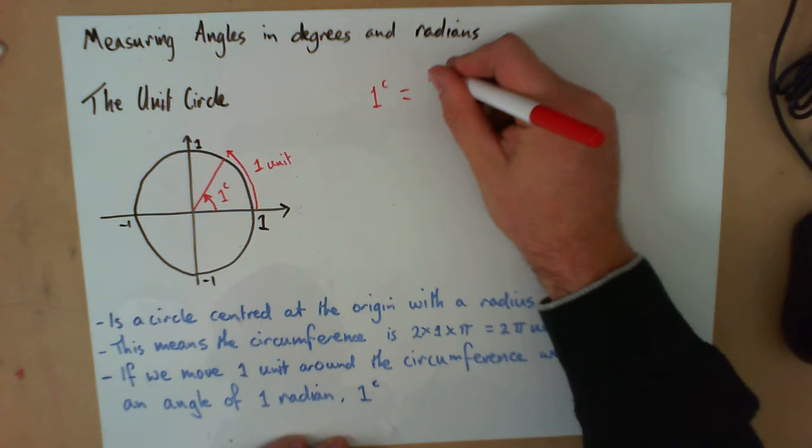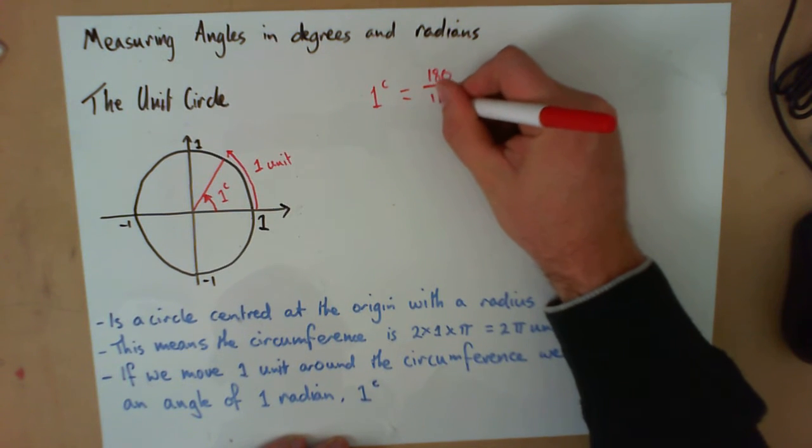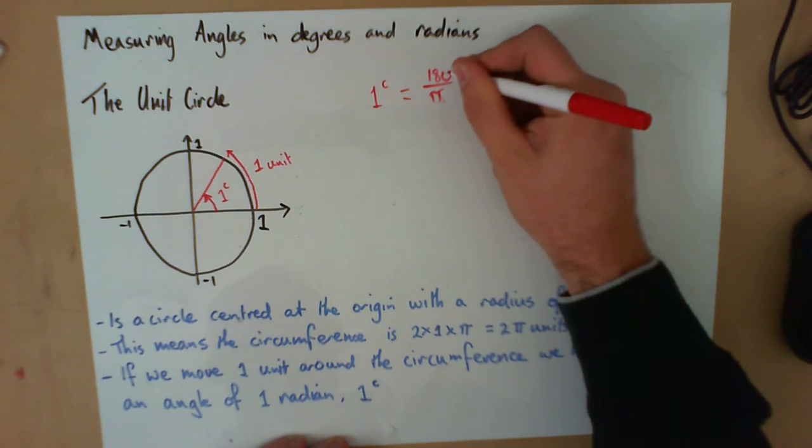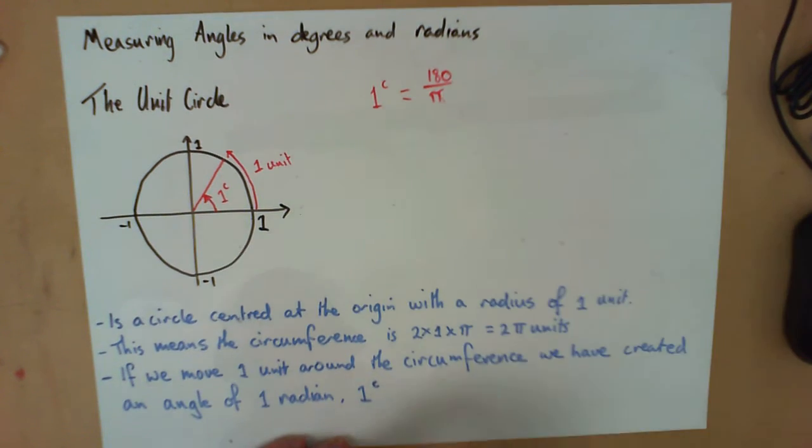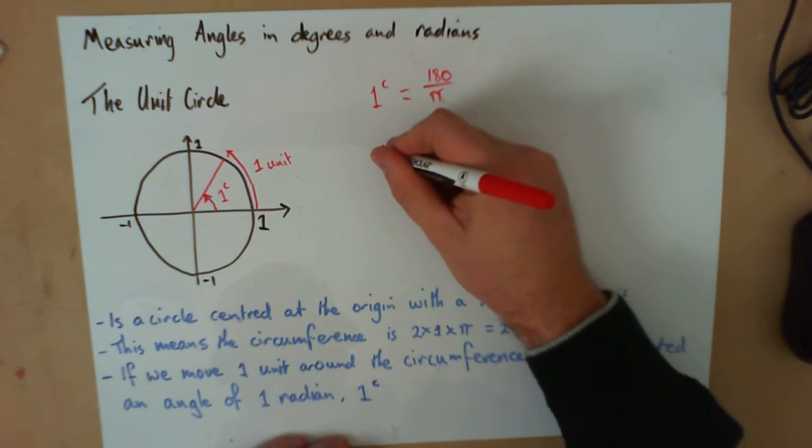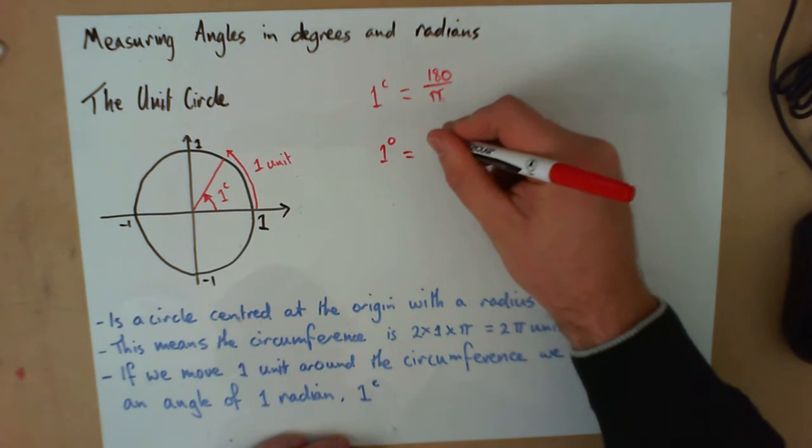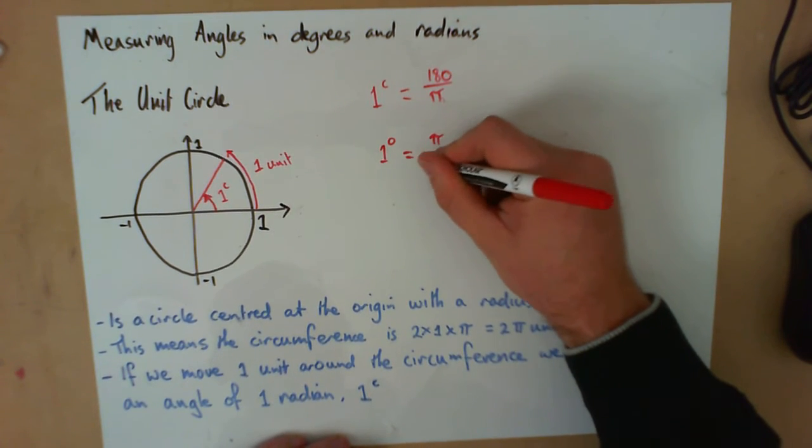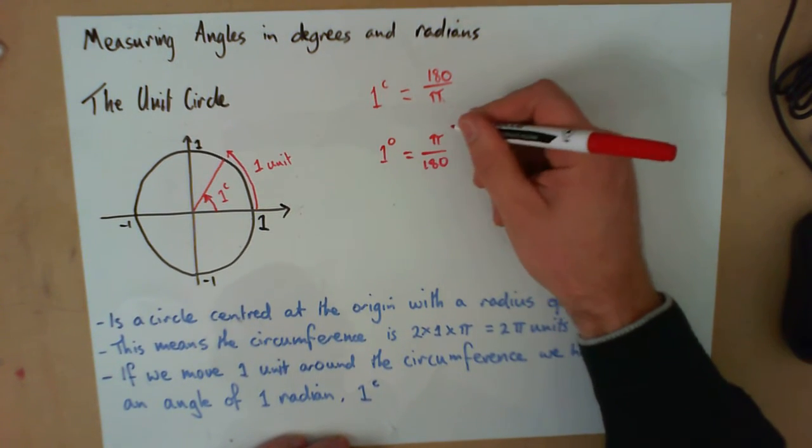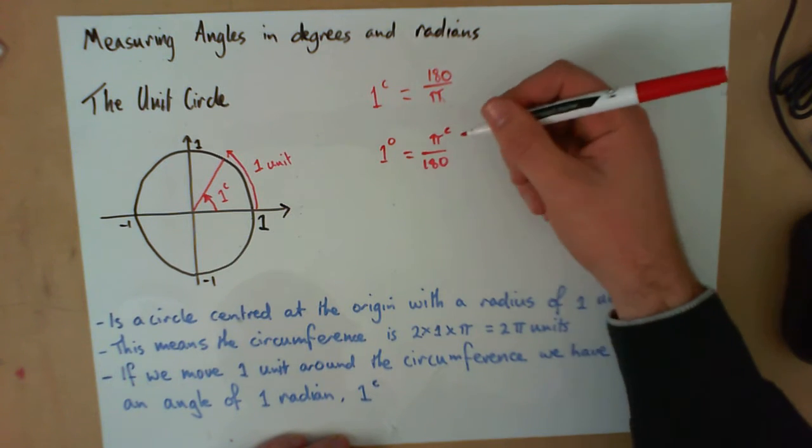180/π. And 1 degree is equal to π/180 radians.